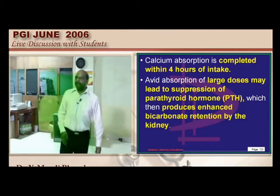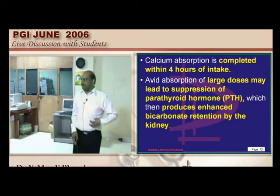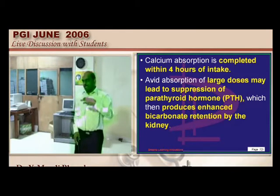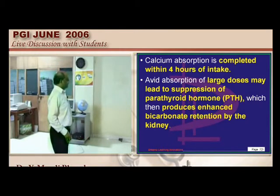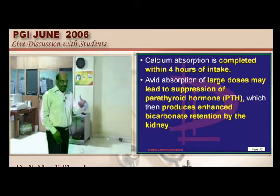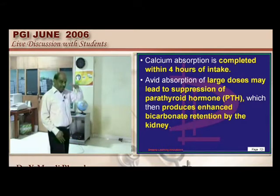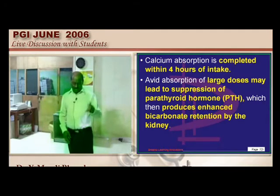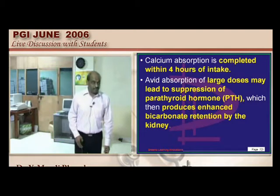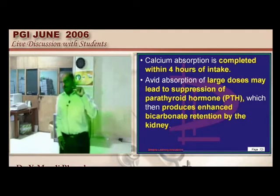In milk alkali syndrome, calcium carbonate taken for peptic ulcer is completely absorbed within four hours. Excess calcium absorption suppresses PTH. Normally, hypocalcemia stimulates PTH — so more calcium means suppression of PTH.